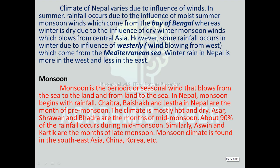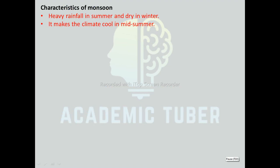Monsoon is the periodic or seasonal wind that blows from the sea to the land and from the land to the sea. In Nepal, monsoon begins with rainfall. Chaitra, Baishakh, and Jestha are the months of pre-monsoon — the climate is moist, mostly hot and dry. Ashadh and Bhadra are the months of mid-monsoon, during which about 90% of rainfall occurs. Ashwin and Kartik are the months of late-monsoon. Monsoon climate is found in Southeast Asia, China, Korea, etc. A key characteristic of monsoon is heavy rainfall in summer and dry conditions in winter, making the climate cool in mid-summer.